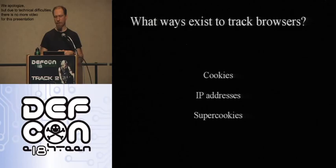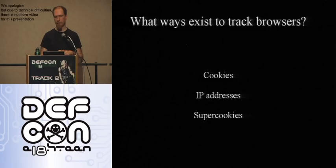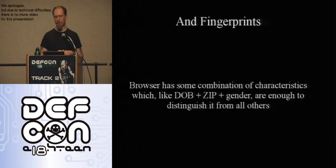Everyone here knows about cookies and has browser settings to delete or limit them. IP addresses can be hidden by a proxy server, or they change as you move between home, a friend's house, a café, or work. Lastly, there are nasty things called super cookies — the most infamous example being Flash cookies — which are essentially like regular cookies except they persist even when you tell your browser not to set cookies, because Flash has its own separate settings page. You have to jump through all three hoops — cookies, IP addresses, super cookies — to avoid being tracked. Then it's time to ask whether you can be tracked by a fingerprint.